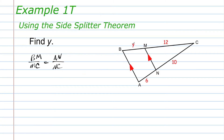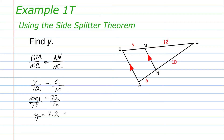Substituting in what we have: BM is Y, over MC which is 12, equals AN which is 6, over NC which is 10. Using the cross-products property: 10 times Y is 10Y, and 12 times 6 is 72. Dividing each side by 10, Y equals 7.2 — or as a mixed number, 7 and one-fifth. So the length of segment BM is 7.2.